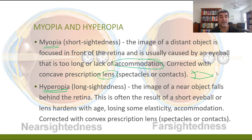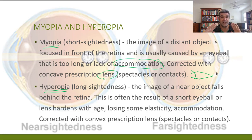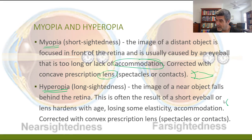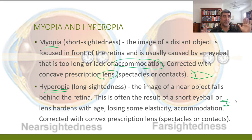For hyperopia, we have trouble seeing nearer objects and are better at long-distance vision. The focus is effectively too far back, so we need to bring it forward. That means we need a convex lens, which converges those light rays in just a little bit, bringing the focal point closer and more in line with where the retina actually is.